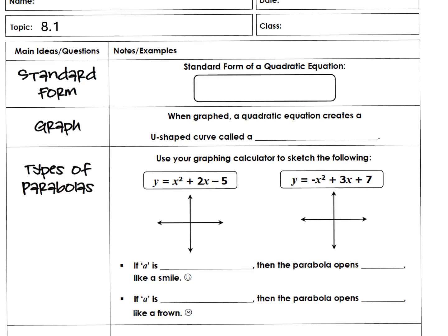We're going to start with the standard form of a quadratic. Anyone think they know it? It's y equals ax² plus bx plus c. So c is a constant — some number. A, B, and C are numbers that will be placeholders in your standard form. You'll always have a y and an x in it, but eventually we're going to solve for that x value. So this is your standard form for a quadratic.